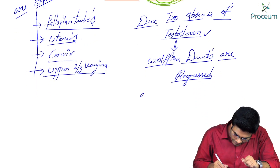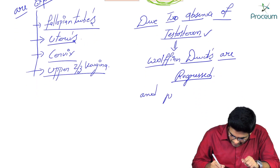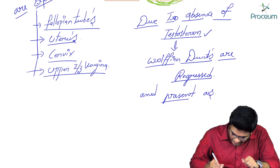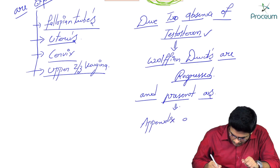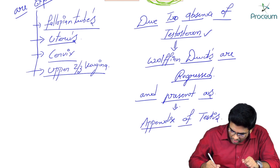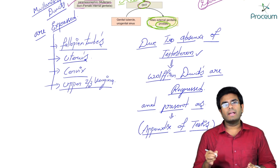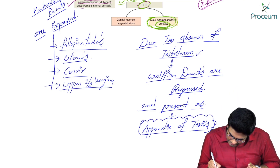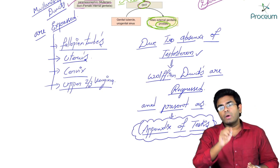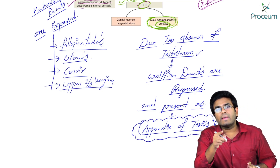The regressed Wolffian ducts in a female are present as Gartner's duct. In a male, the paramesonephric ducts — also known as the Mullerian ducts — are regressed and present as a remnant known as the appendix of testis.